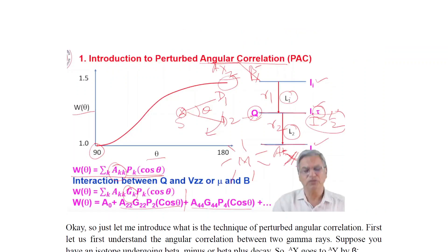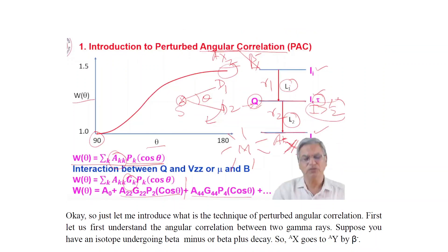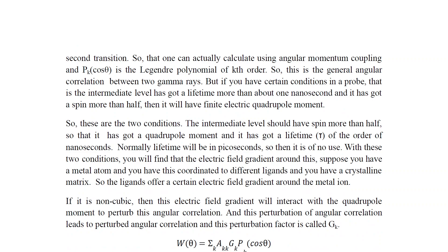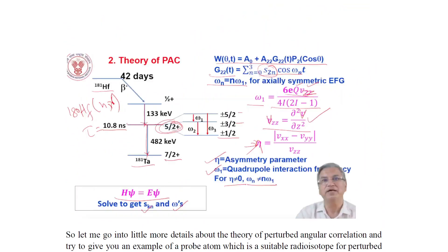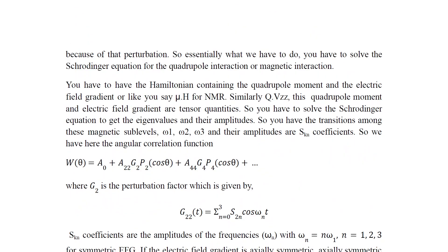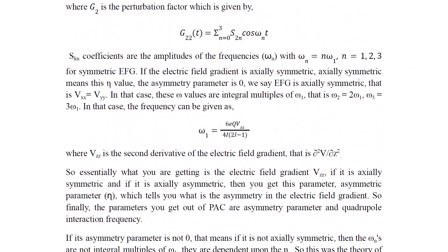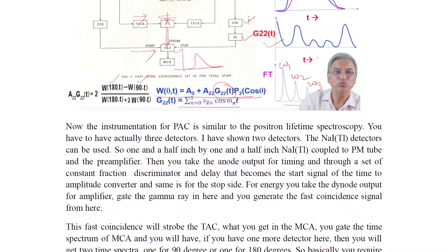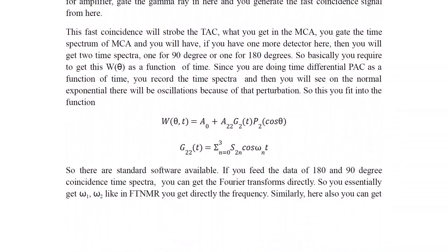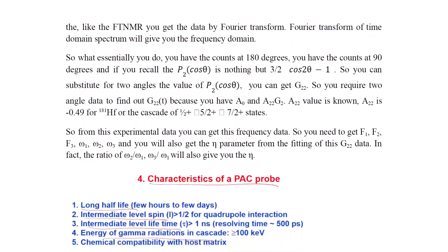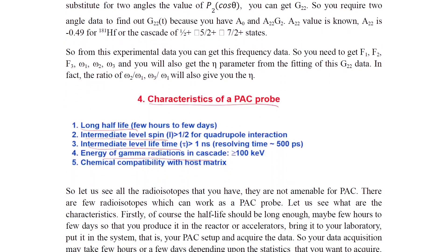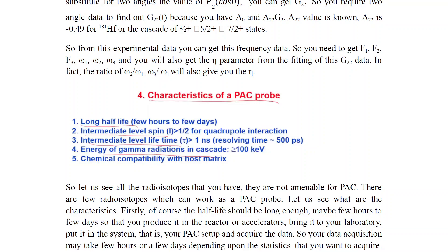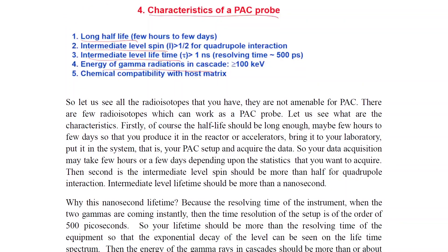Introduction and theory of Perturbed Angular Correlations (PAC), along with its instrumentation and characterization. Key characteristics of a PAC probe include: long half-life, intermediate-level spin, intermediate-level lifetime, and appropriate gamma ray energy. Chemical compatibility with the host material is also required.